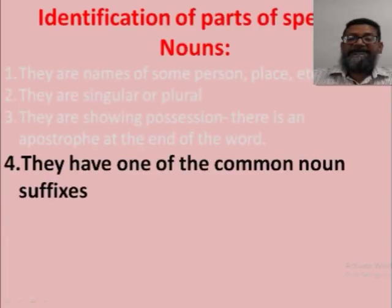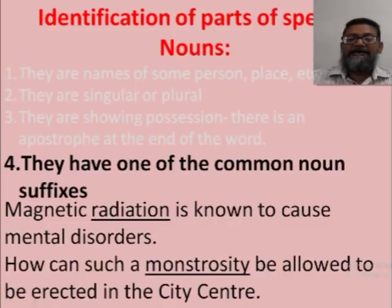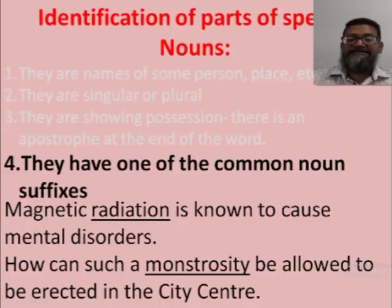Another easy way to identify nouns is they have common noun suffixes. For example: 'Magnetic radiation is known to cause mental disorders.' Radiation ends in -TION, a suffix normally used in nouns. 'How can such a monstrosity be allowed to be erected in the city center?' Monstrosity has the suffix -ITY, which is again a sign of a noun.